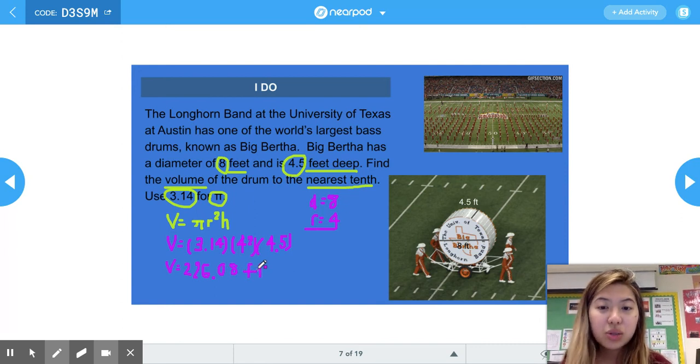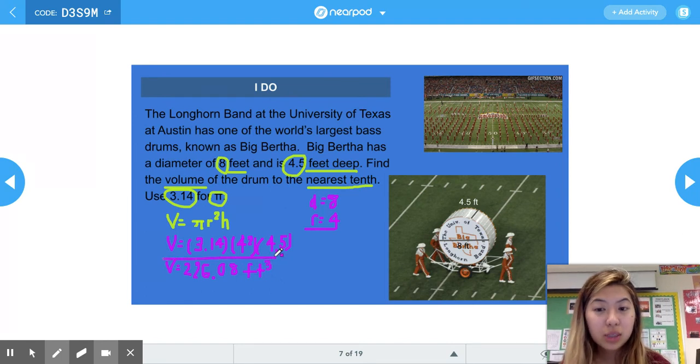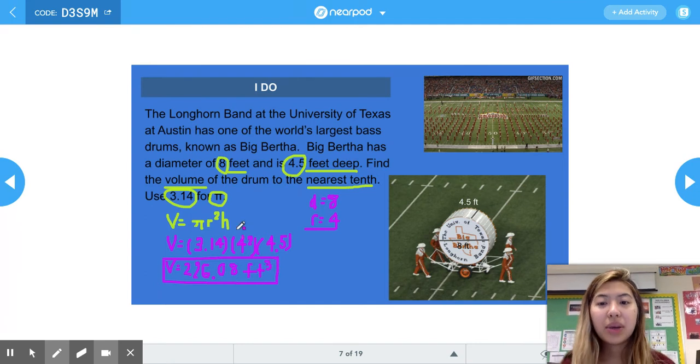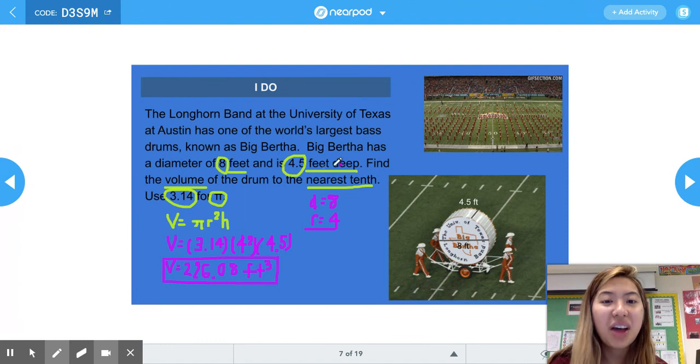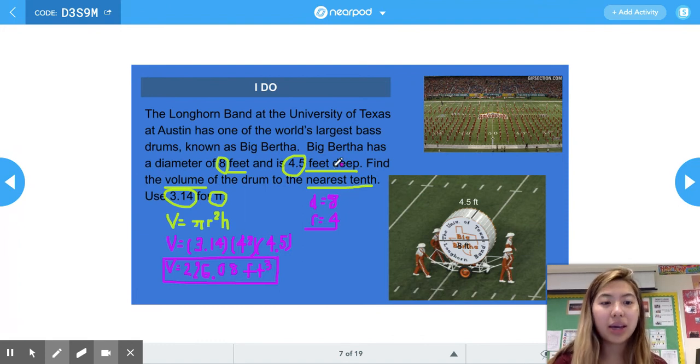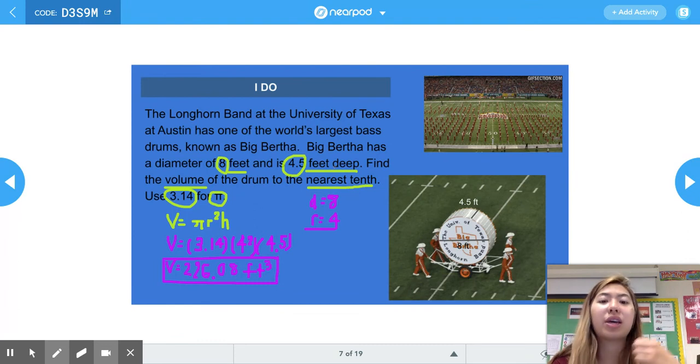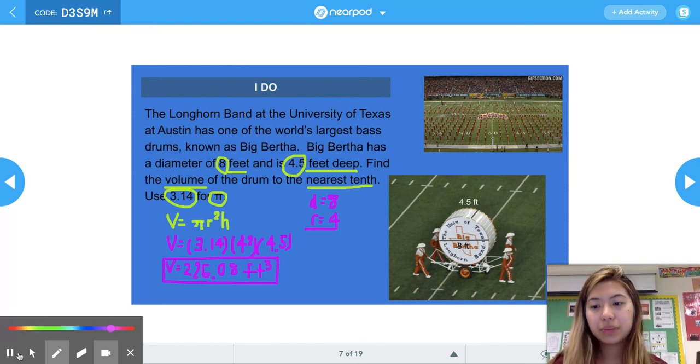The important thing to remember about finding volume is that your unit of measurement, in this case feet, is going to be cubed or raised to the power of 3. Because if we think about it, our radius was 4 feet, so we have 4 feet times 4 feet, which is 16 feet squared, and then we multiply that by our height, which was 4.5 feet. We had to multiply together 4 feet times 4 feet times 4.5 feet, and that's what gives us the feet cubed, or feet to the power of 3.